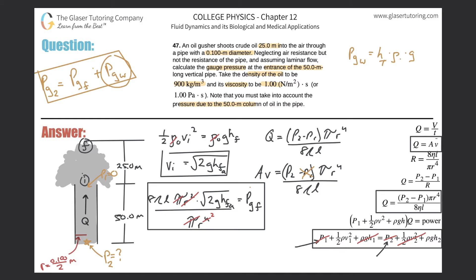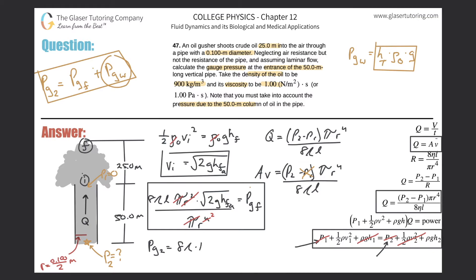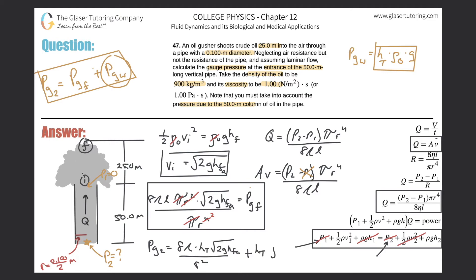Combining both contributions, the total gauge pressure at the bottom is: (8 · η · h_tube · √(2g · h_air)) / r² + ρ · g · h_tube. Here h_tube = 50 m (tube height), ρ = 900 kg/m³ (oil density), h_air = 25 m (height in air), r = 0.05 m (pipe radius), g = 9.8 m/s². Now we plug in all values.